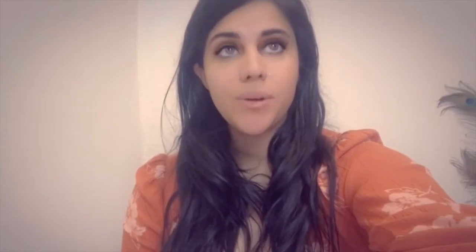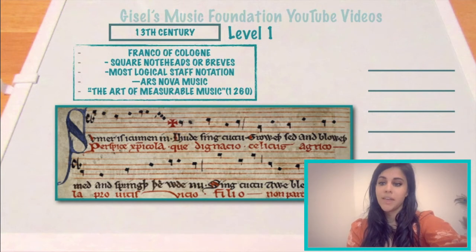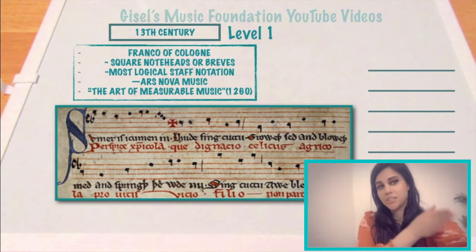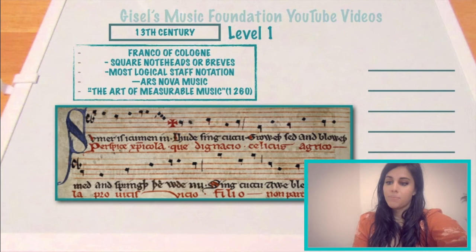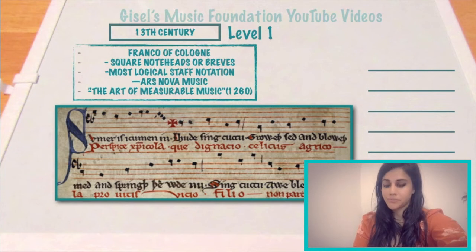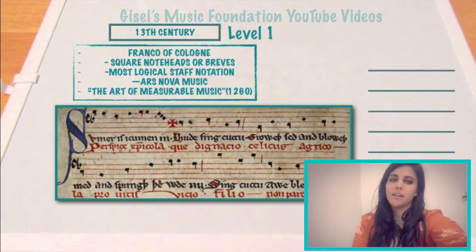Today's music has much similarity with back in the 13th century. That musical style was called Ars Nova, and they developed the five lines throughout the 13th century until today. Modern tuning was also invented and we were able to start using accidentals. Prior to that, a music theorist named Franco de Cologne came up with square note heads called breves and semi-breves, and he wrote a book on the art of measurable music around 1260.